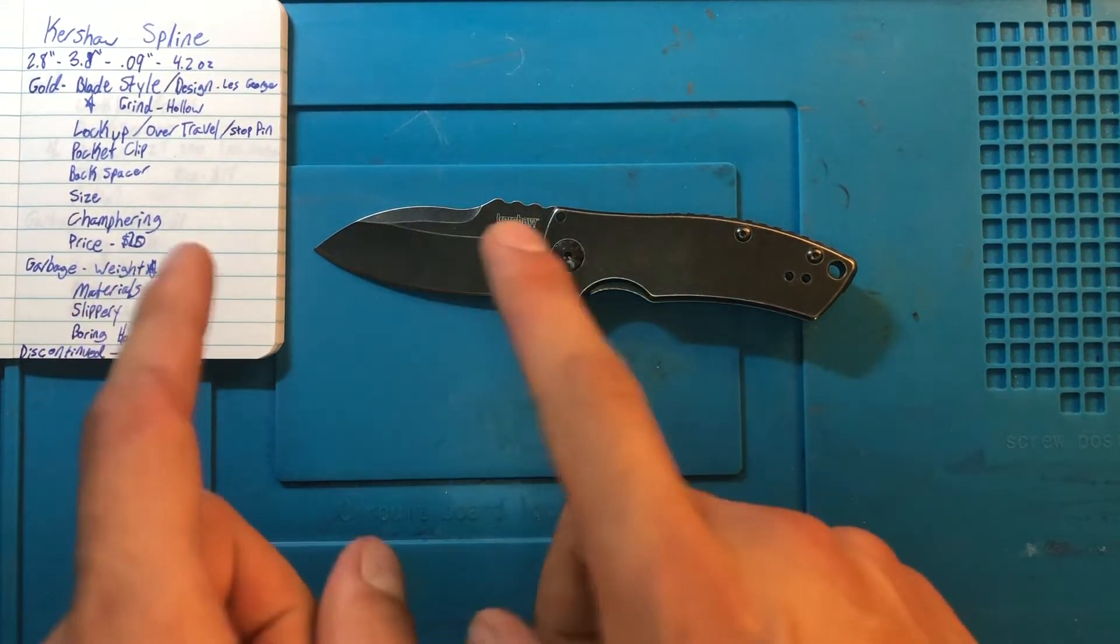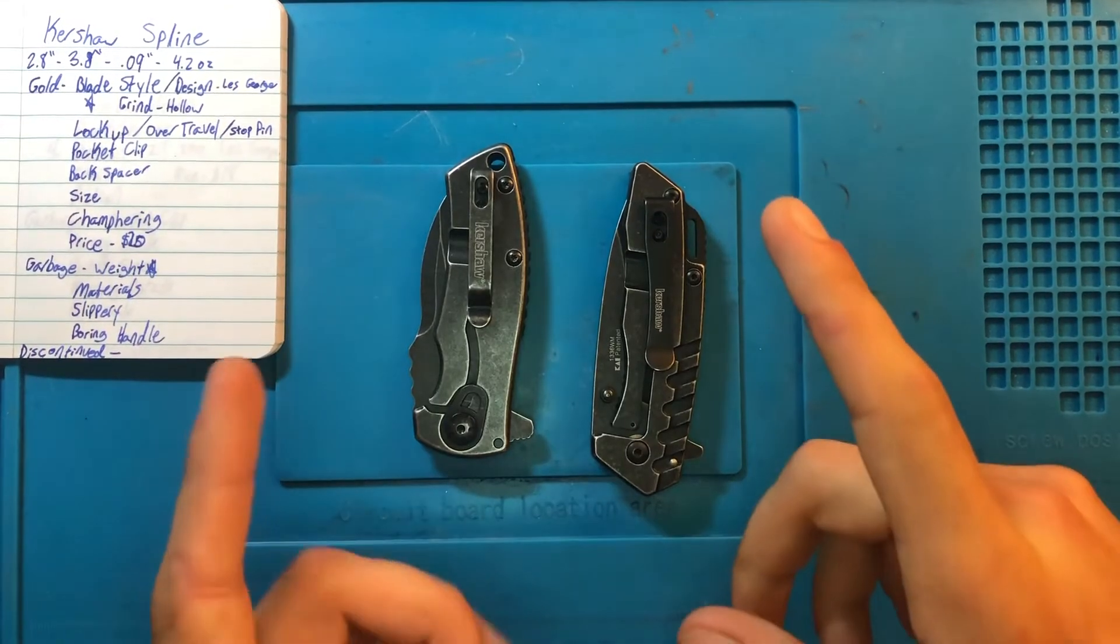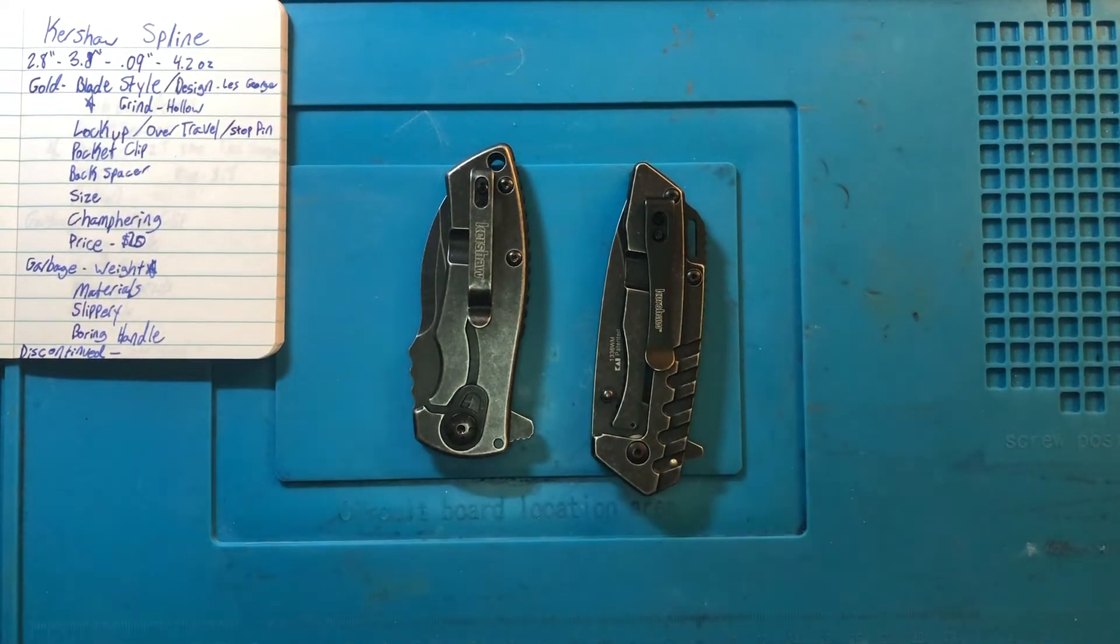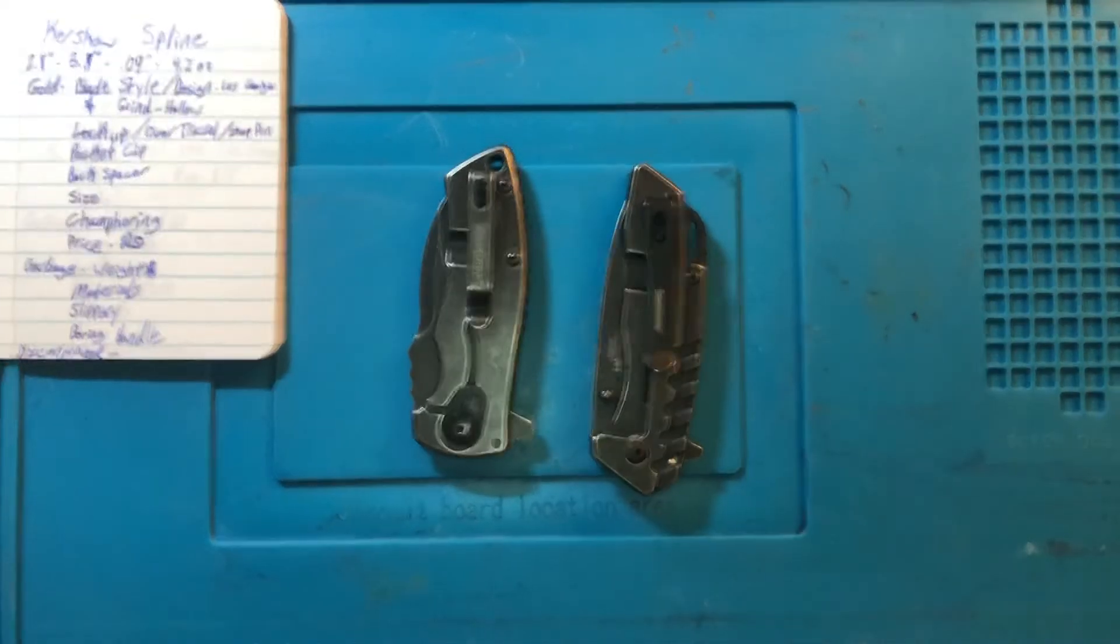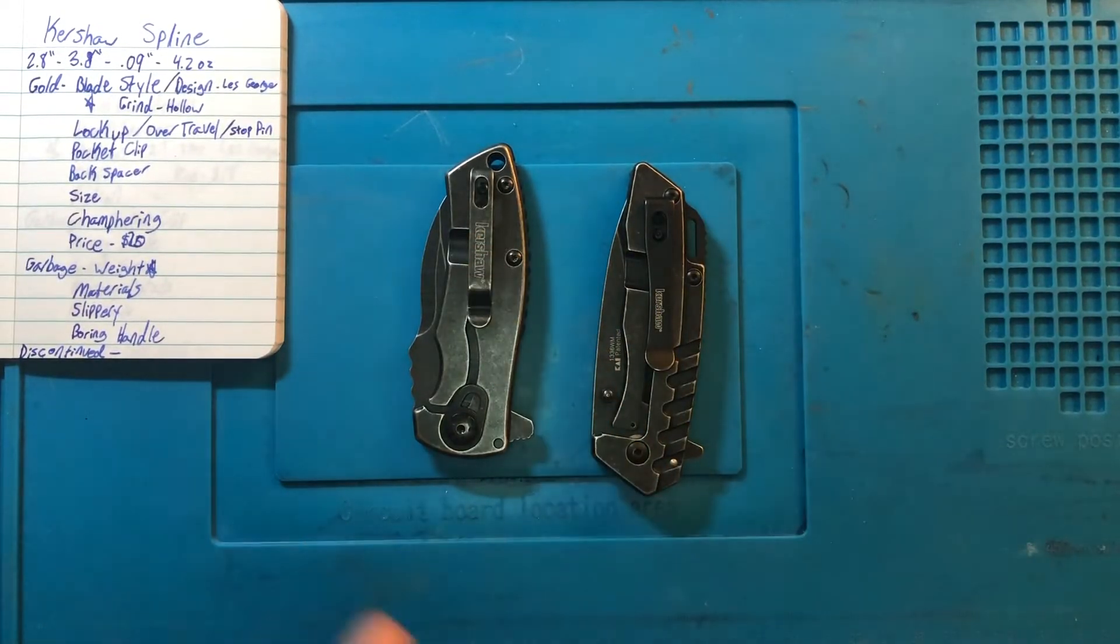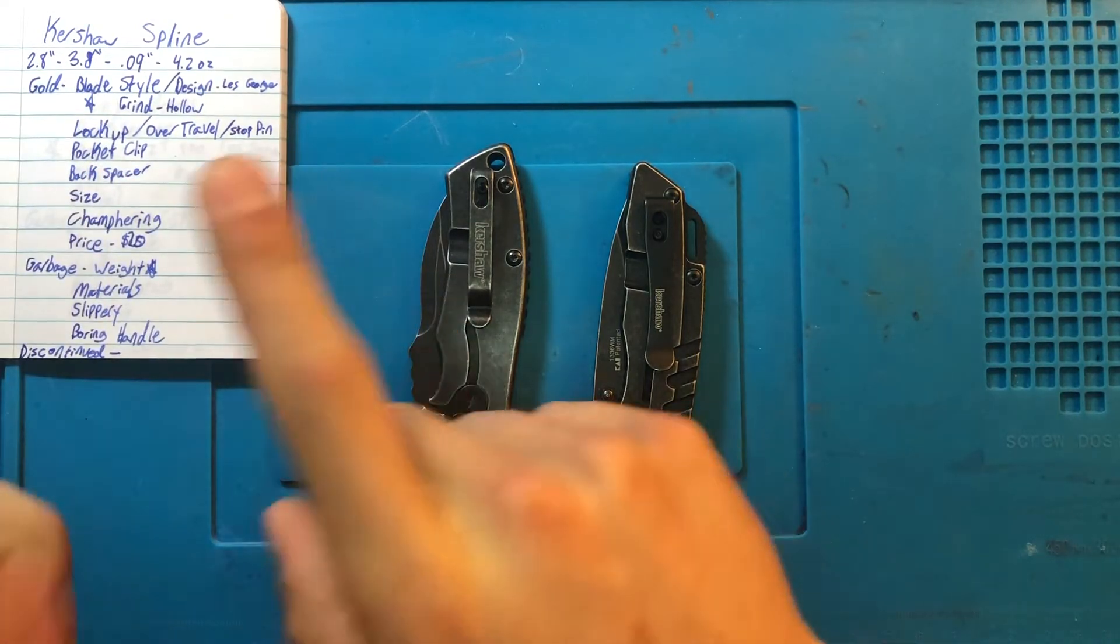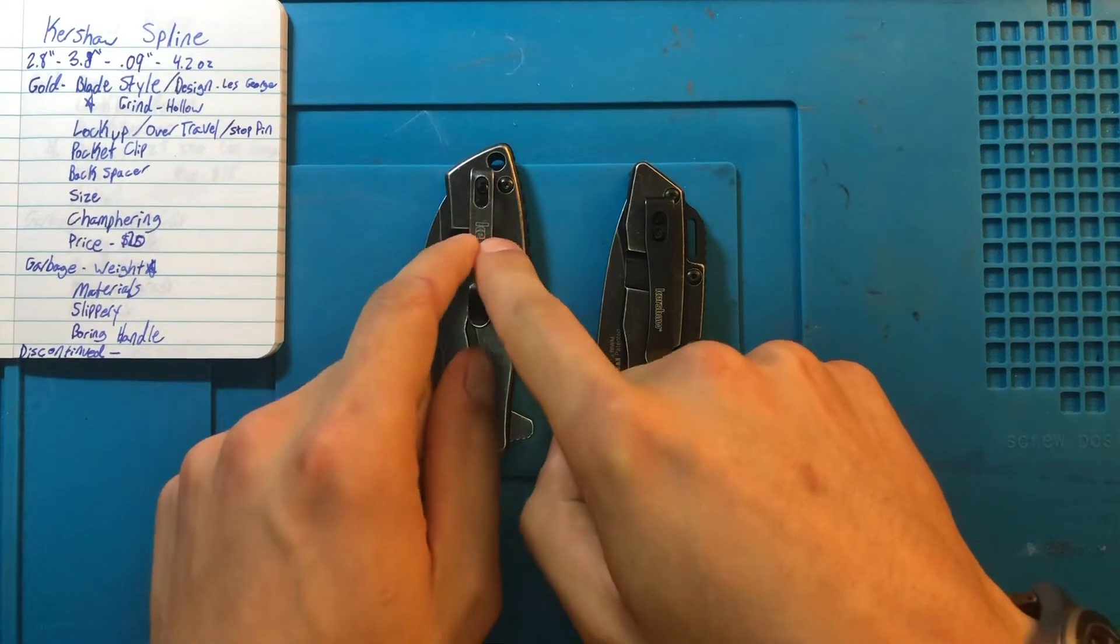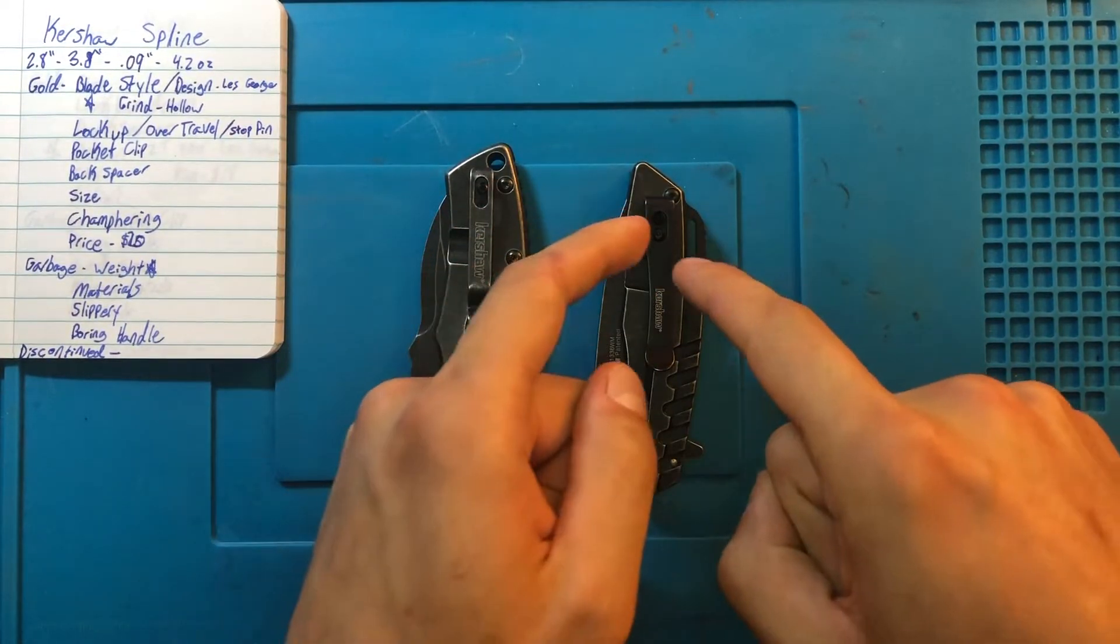However, not everything is gold. There's a little bit of garbage. Starting us off on the garbage is unfortunately something that is game-breaking for knives that I like very much. And that is the stock pocket clip. Now, I have the pocket clip written as a plus, but that's because I'm forgetful and I forgot that this is not the Spleen's stock pocket clip. This is.